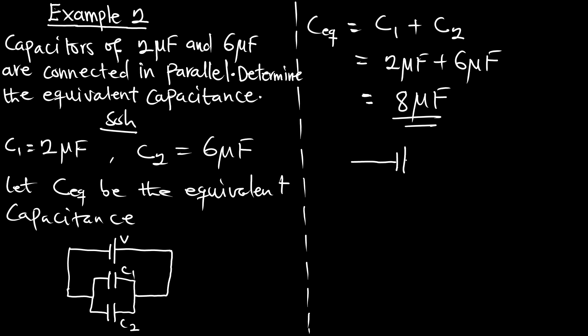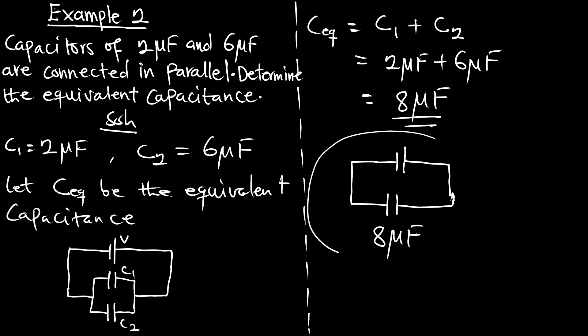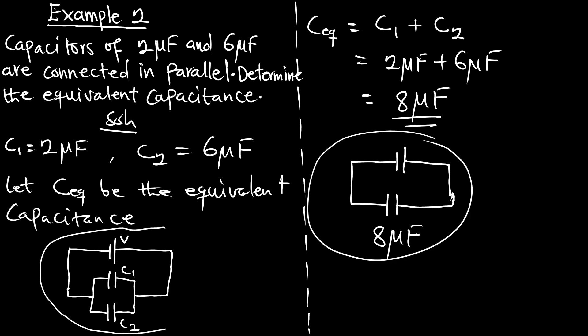What this means is we can have a circuit with the same voltage source but with a single capacitor of 8 microfarad. This single-capacitor figure will produce the same effect as the parallel arrangement of the two capacitors, because we are using the same equivalent capacitance. This is the episode on parallel arrangement of capacitors — subscribe to the channel, like the videos, and check out the next episode on the series arrangement of capacitors. Thank you.